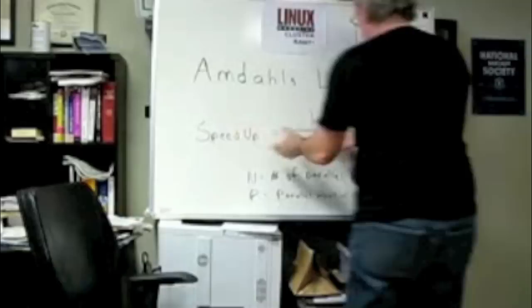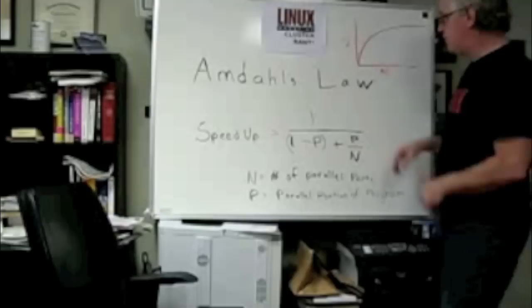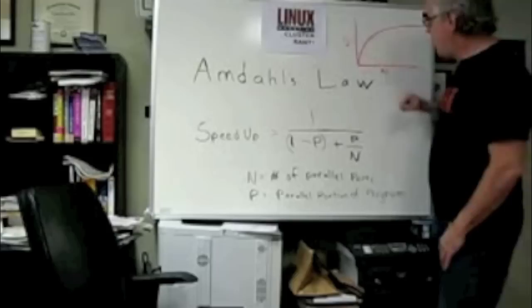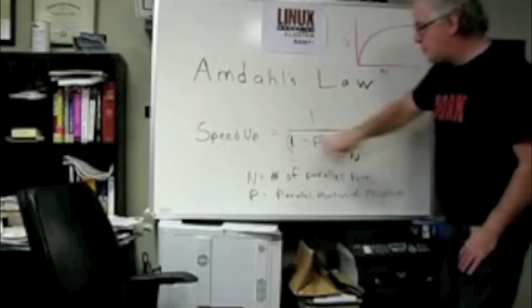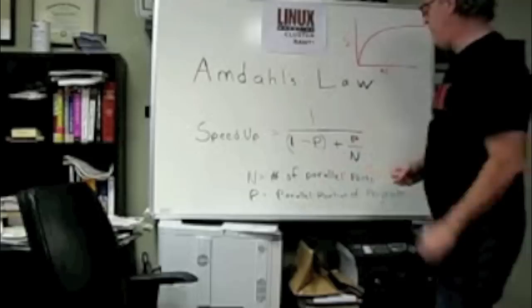And if we solve this program for various values of p, well, for a single value of p and various values of n, we always get a curve that looks like this, which is a diminishing return, which says at some point things are not going to speed up any faster than the sequential portion. Why? Because as n gets bigger, this stays the same, this term gets smaller and smaller, and in the limit it goes to zero.